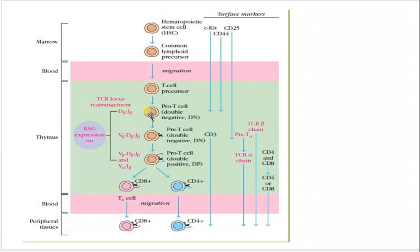In the pro T-cell, gene rearrangement is going on — TCR locus rearrangement. Generally, gene rearrangement happens during gametogenesis, but in special cells like B-cells and T-cells, gene rearrangement also happens after embryo development. This gene rearrangement develops new receptors on the pro T-cell. You need to remember that gene rearrangement is ongoing in these cells.